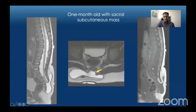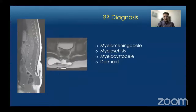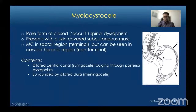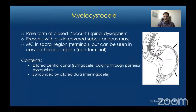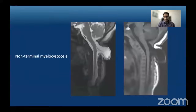The diagnosis is myelocystocele. Myelocystocele is a closed neural tube defect where there is herniation of the dilated central canal or syringocele through a defect in the posterior elements. It is a rare form of closed or occult spinal dysraphism, presenting with a skin-covered subcutaneous mass. Most commonly seen in the sacral region, it is called terminal myelocystocele; when in the cervical or thoracic region it is called non-terminal myelocystocele.